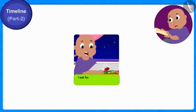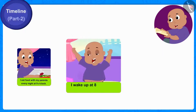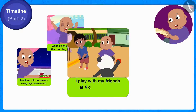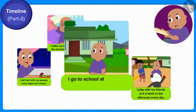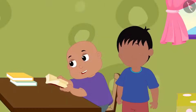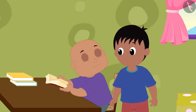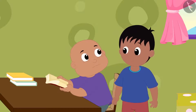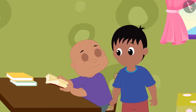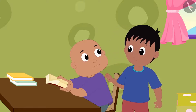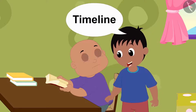Babalu started reading: I eat food with my parents every night at 9 o'clock. I wake up at 8 o'clock in the morning every day. I play with my friends at 4 o'clock in the afternoon every day. I go to school at 9 o'clock in the morning every day. But Raju stopped him and said: in what incorrect sequence have you written your daily routine? Why don't you write it more beautifully in a sequence using the timeline?